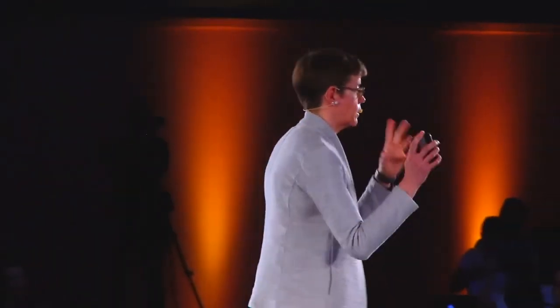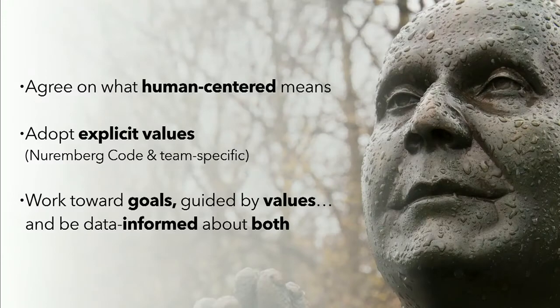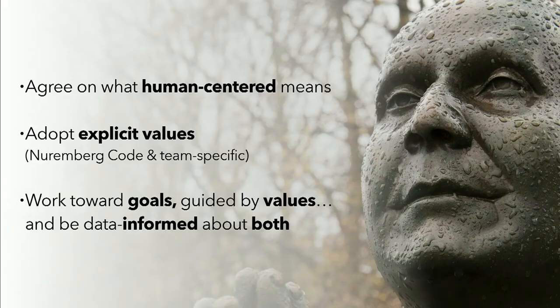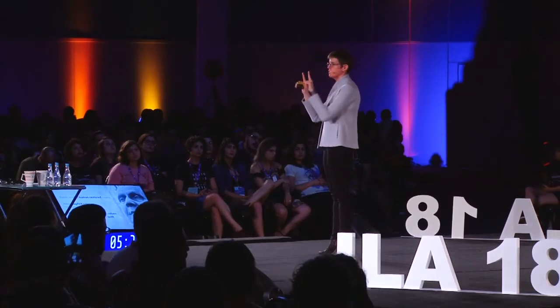Until we learn how to measure the things we value, we're going to overvalue and over-optimize for the things we measure — and that is metric-centered design pulling us away from human-centered decisions. So I think we're all here to be more human-centered, regardless of what we call ourselves. If we can agree with our teams and clients on what human-centered means and use that as a foundation; if we can adopt explicit values — I would suggest starting with the Nuremberg Code; and if we start to change our relationship with metrics — never accept a metric as the goal, always ask what it supports, and never use just one naked metric, always pair the business goal metric with the values metric — I think we can start to change the conversation. Thanks for listening.